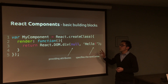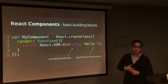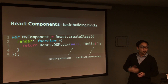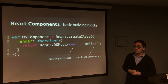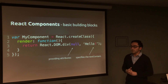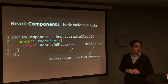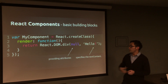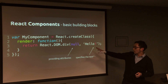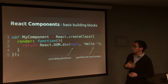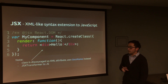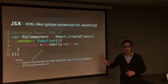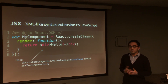Let me show you some code. This is an example of how you create a React component. First you create a variable called MyComponent, and then you call React.createClass. You can get React via CDN, a file install, or Browserify. Then you create a class, and it renders by returning a React DOM element. The first argument is the attributes of the element, and the second is the content you want to render.